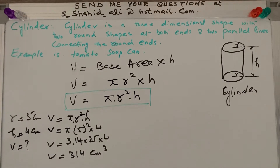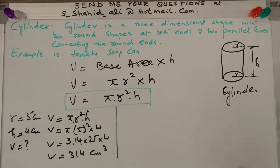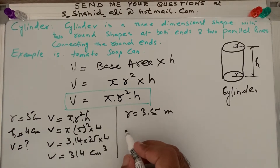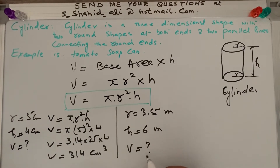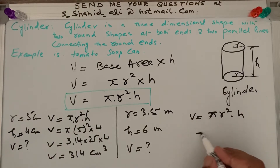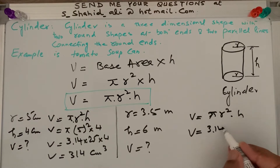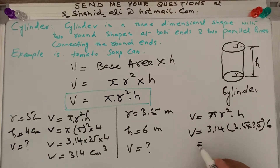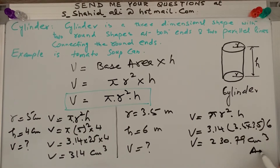There are three variables in this formula: radius, height of the cylinder, and volume. If any two variables are known, we can find the third. Now the next question: r equals 3.5 meters and h equals 6 meters — what is the volume of this cylinder? Volume equals pi r squared h, so 3.14 times 3.5 times 3.5 times 6. Multiplying all these numbers gives 230.79 meters cubed.